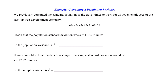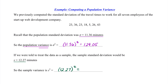We previously computed the standard deviation of the travel times for all seven employees. We found sigma to be 11.36, so the population variance — sigma squared — would be 11.36 squared, giving us a population variance of 129.05. With that same idea, if we treat the data as a sample, the sample standard deviation was 12.27, so the sample variance would be 12.27 squared, which gives us 150.55.